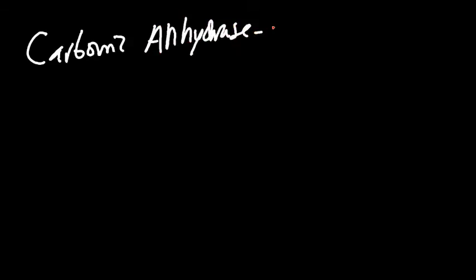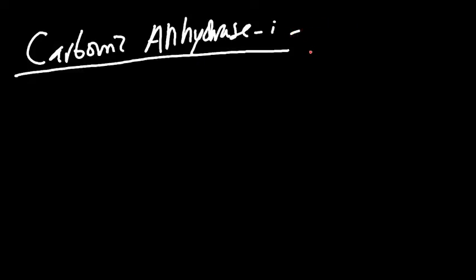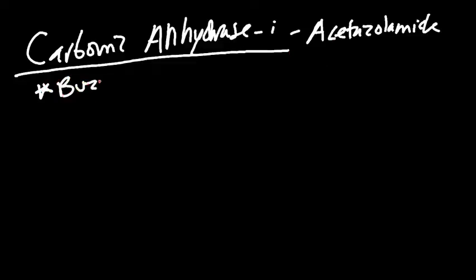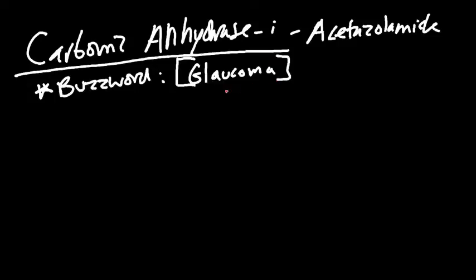Let's talk about another type of diuretic — the carbonic anhydrase inhibitor. There's a lot to cover, so I'll break it down into different portions. The prototypical carbonic anhydrase inhibitor is acetazolamide. A key buzzword: when you think glaucoma, you want to use a carbonic anhydrase inhibitor. If you hear a patient has glaucoma, keep this in your arsenal.